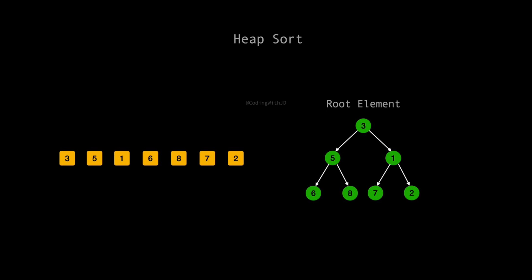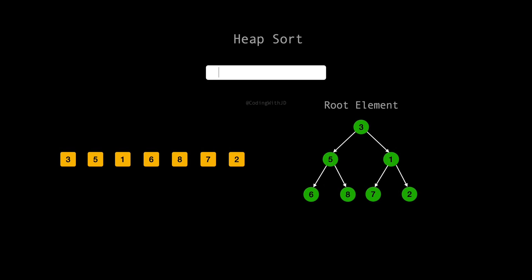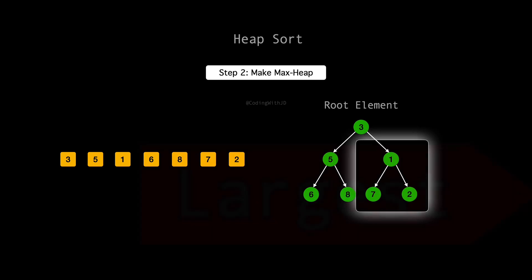Now that our binary tree is all set up, it's time to transform it into a max heap. This means we need the biggest numbers at the top, making sure every parent is larger than its kids. Let's adjust this step by step. We begin at the bottom of the tree with the nodes 1, 7, and 2. These are our leaf nodes parents and where we start the heap adjustments.